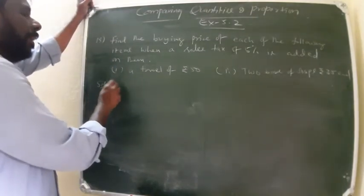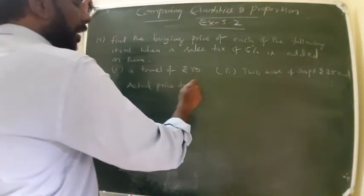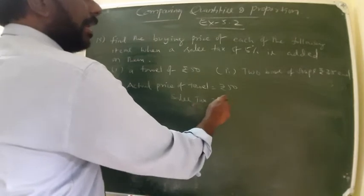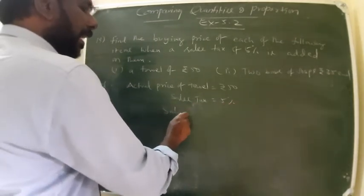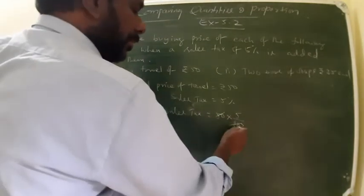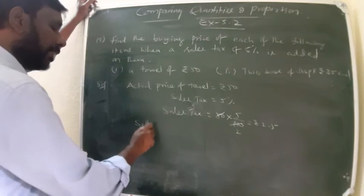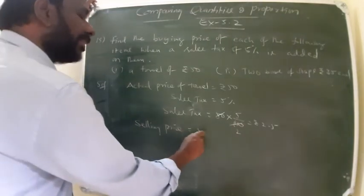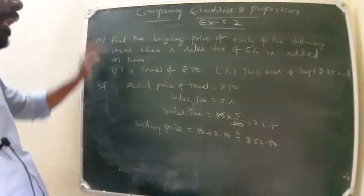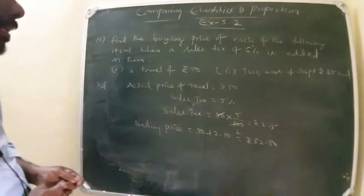So first one here: actual price of towel is Rs. 50, sales tax is 5%. So actual sales tax is 50 into 5 by 100. Two times 5 by 2 means Rs. 2.50. So selling price of towel is 50 plus Rs. 2.50, that's Rs. 52.50. You have to sell this towel including sales tax with Rs. 52.50.